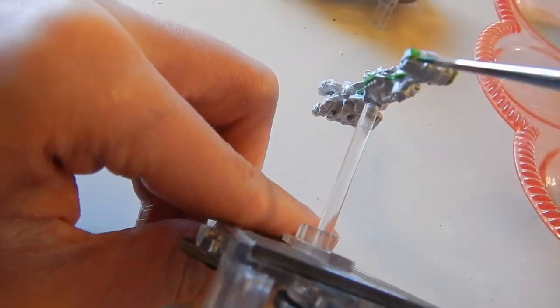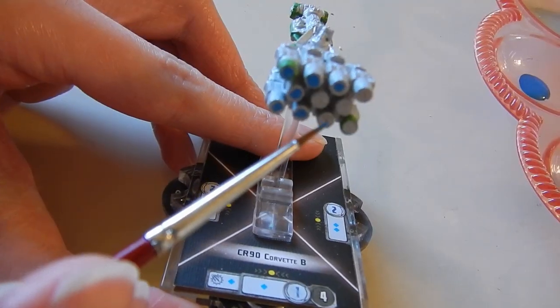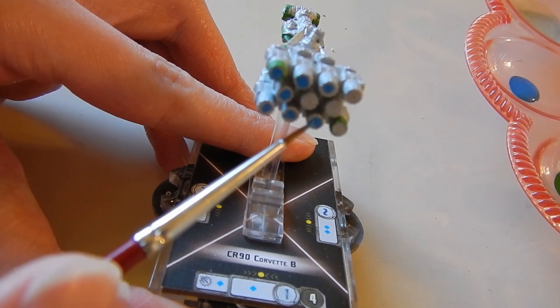After finishing the silver base, I started to put on the green outline. After applying the green, I did some touch-ups and then added in the blue engines.